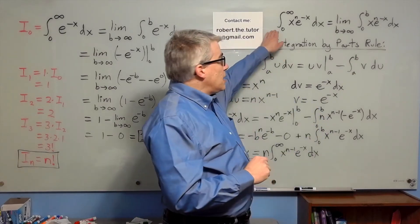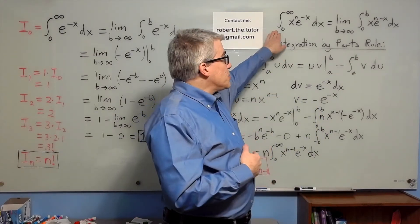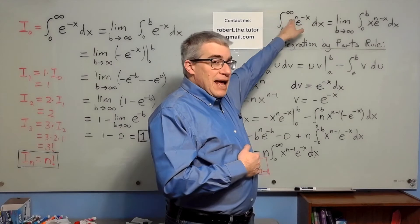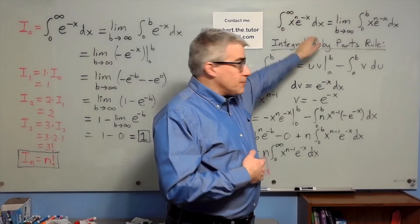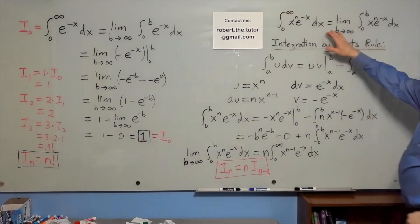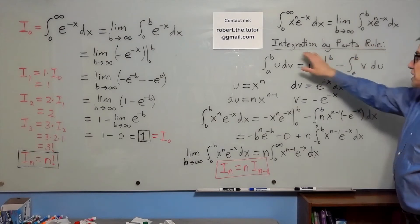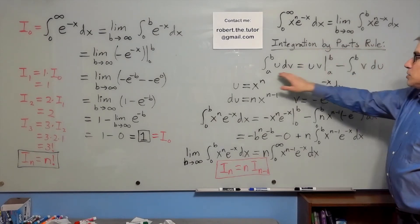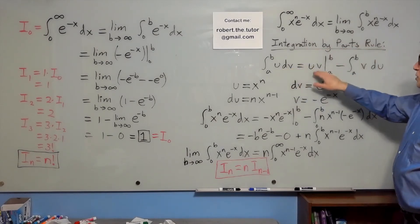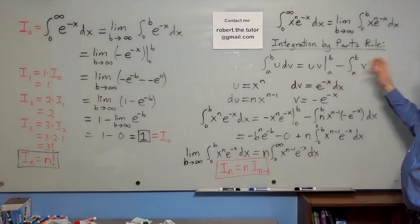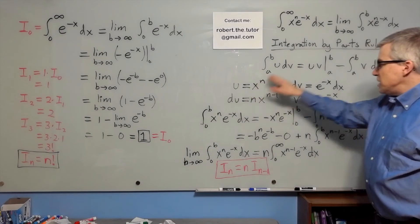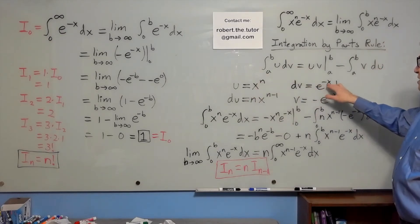Now integral n is going to be the integral of x to the n times e to the minus x. In order to do this integral we need the integration by parts rule. So integral of u dv is u v minus integral v du evaluated or integrated between limits. Let u be x to the n, dv be e to the minus x dx.